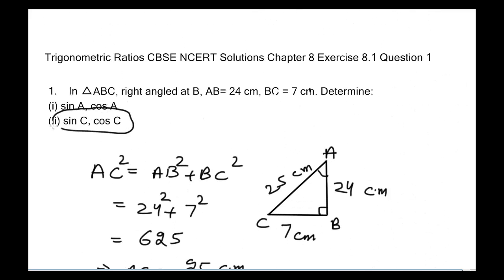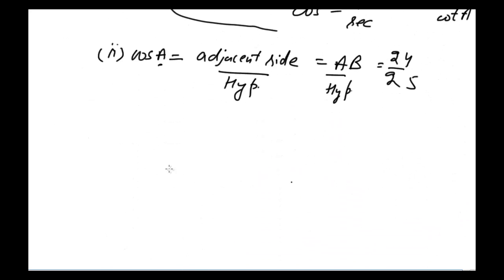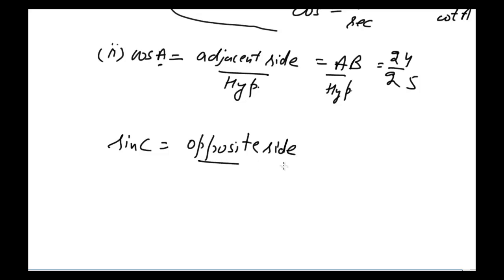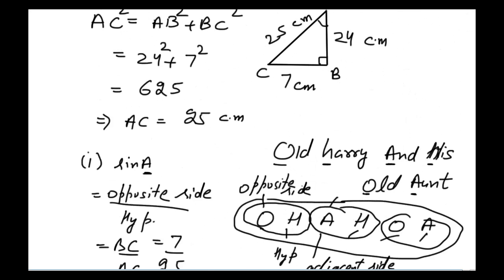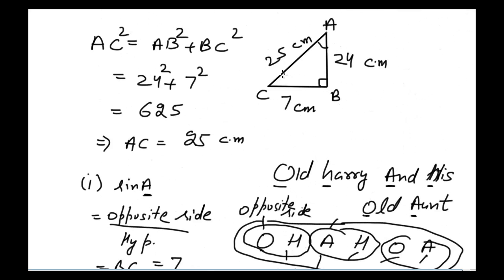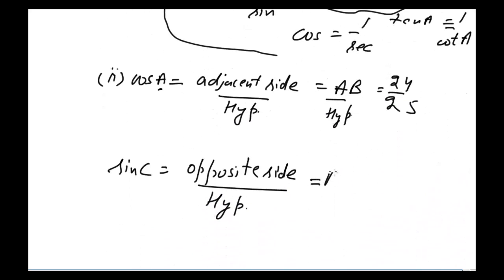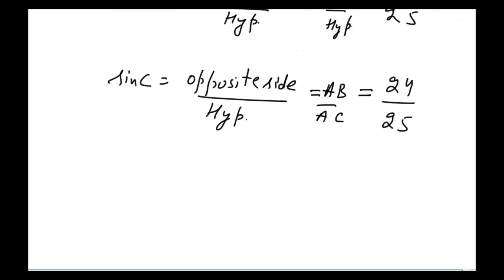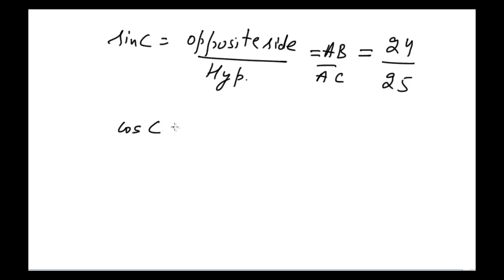Now moving to the second part — finding sin C and cos C. The formula for sin is opposite side divided by hypotenuse. The opposite side to angle C is AB, and the hypotenuse is AC. So sin C = AB / AC = 24 / 25.